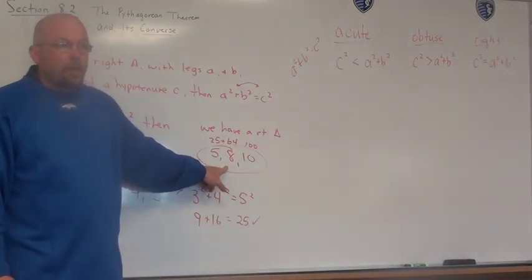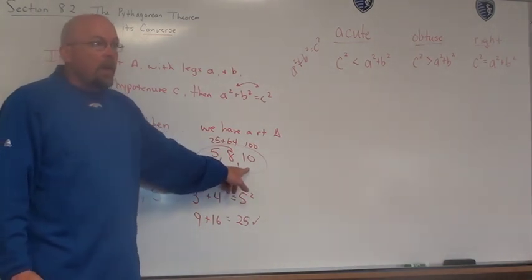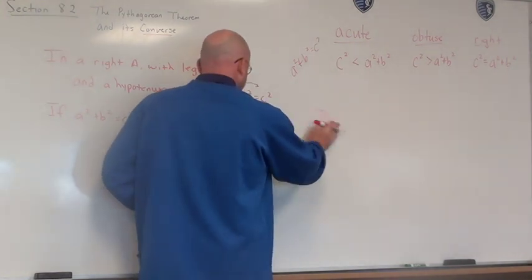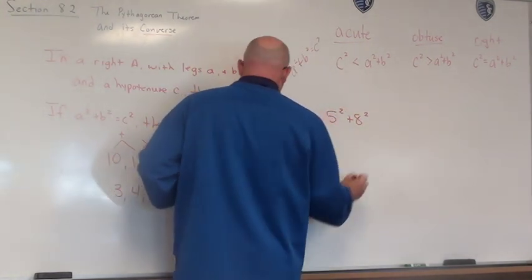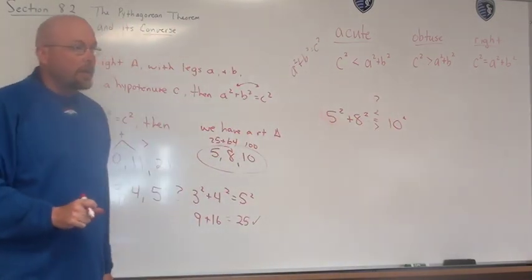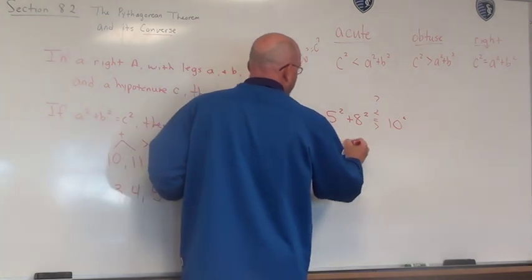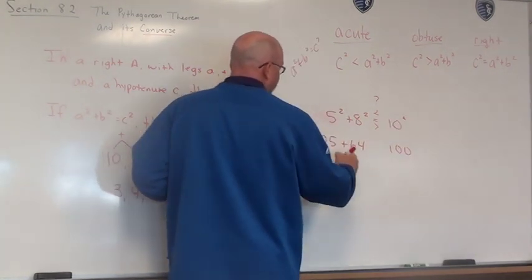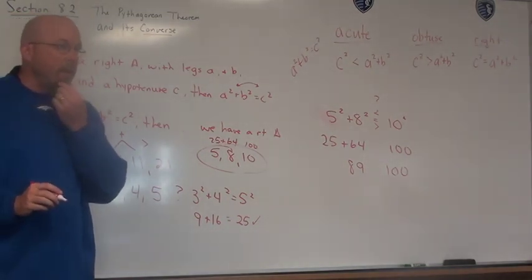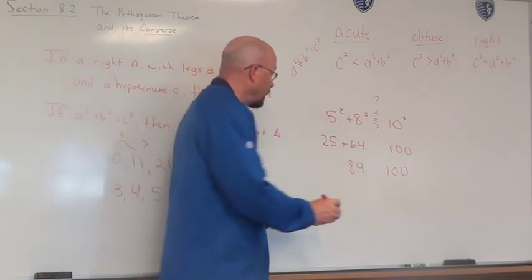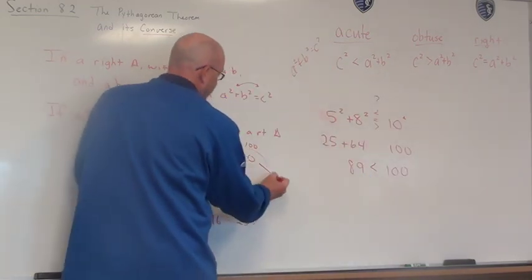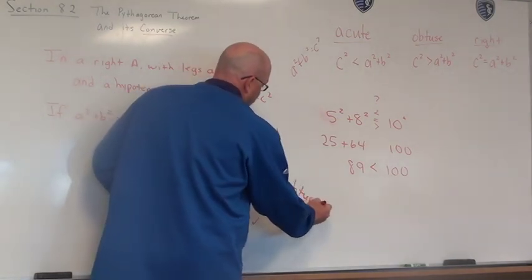Going back to 5, 8, 10: we know it's not right because 25 plus 64 does not equal 100. We want to compare 5 squared plus 8 squared to 10 squared. That's 25 plus 64, which equals 89, compared to 100. C squared is bigger than A squared plus B squared, so this triangle is obtuse.